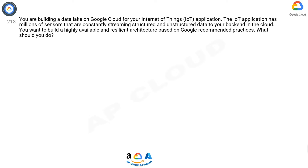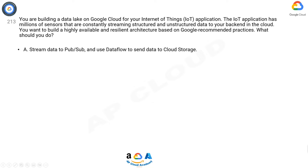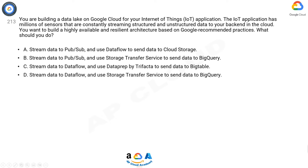Question 213. You are building a data lake on Google Cloud for your Internet of Things (IoT) application. The IoT application has millions of sensors that are constantly streaming structured and unstructured data to your back end in the cloud. You want to build a highly available and resilient architecture based on Google recommended practices. What should you do?